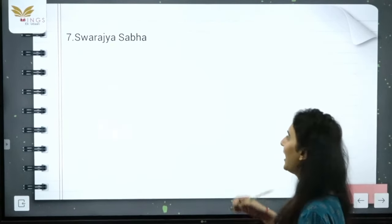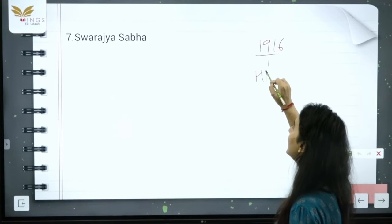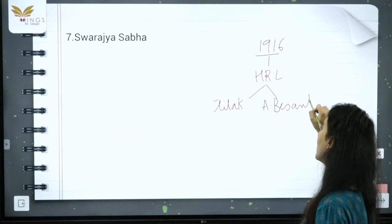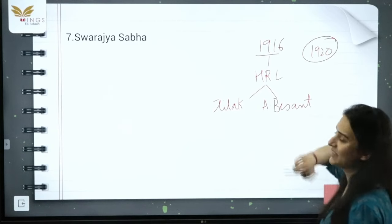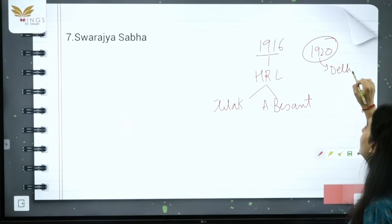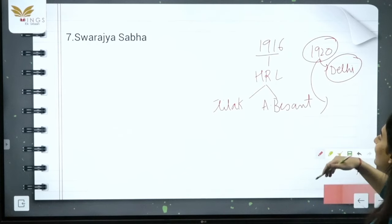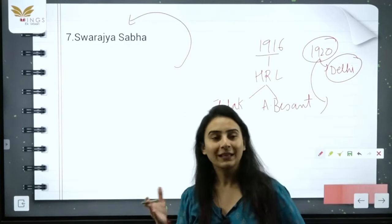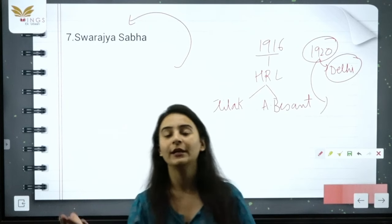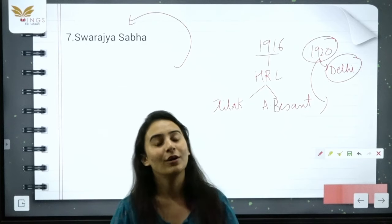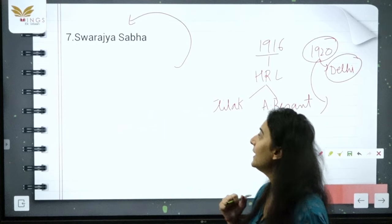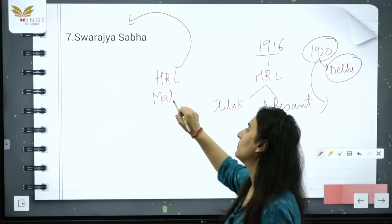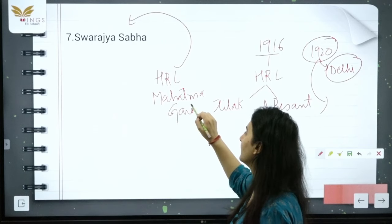Swarajya Sabha — whose name was it? In 1916 the All India Home Rule League was formed by Tilak and Annie Besant. In 1920, Gandhi ji became president of the All India Home Rule League at a Delhi session, and in that same year Gandhi ji changed the name of the All India Home Rule League to Swarajya Sabha. Around 1921-22, Swarajya Sabha became part of the Indian National Congress.